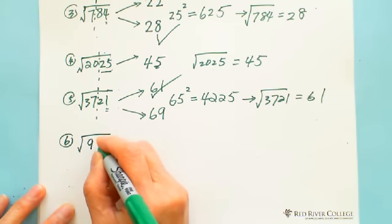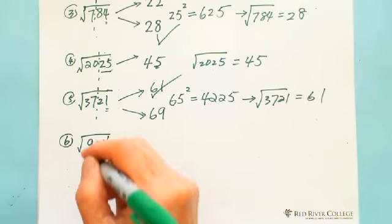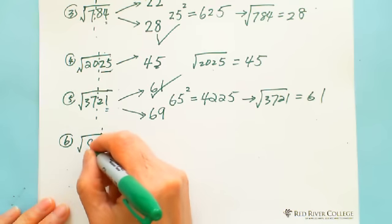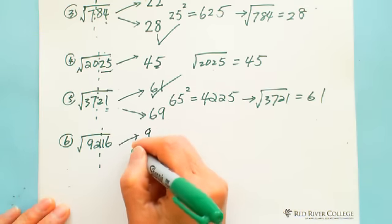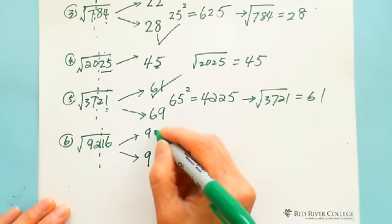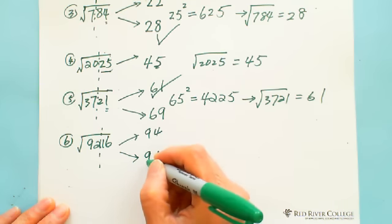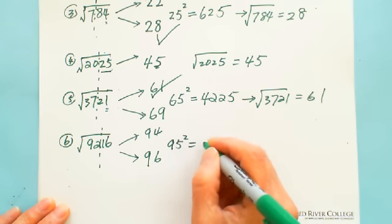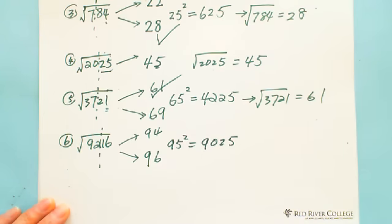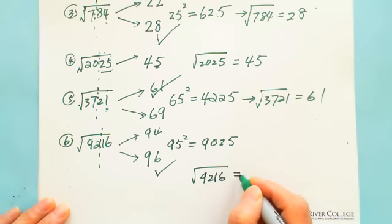One more example with a big number: square root of 9216. Split from right: 92 | 16. Which number squared is close to 92? Nine squared is 81, so the first digit is 9. Last digit is 6 — could be 4 or 6 (since 4+6=10) — so the answer is 94 or 96. We check 95 squared equals 9×10=9025. Since 9216 is greater than 9025, the answer is 96. Square root of 9216 equals 96.